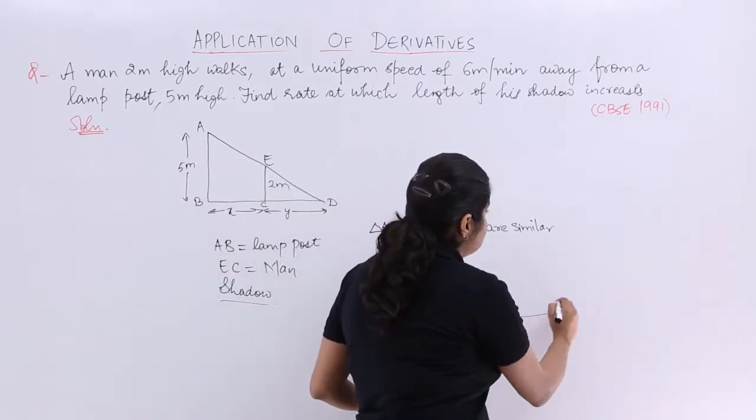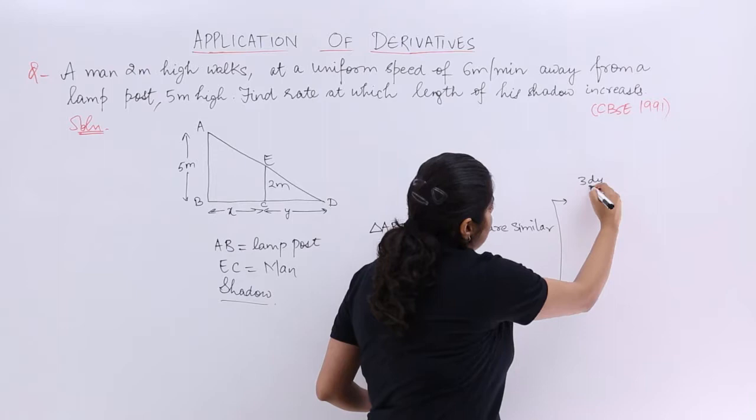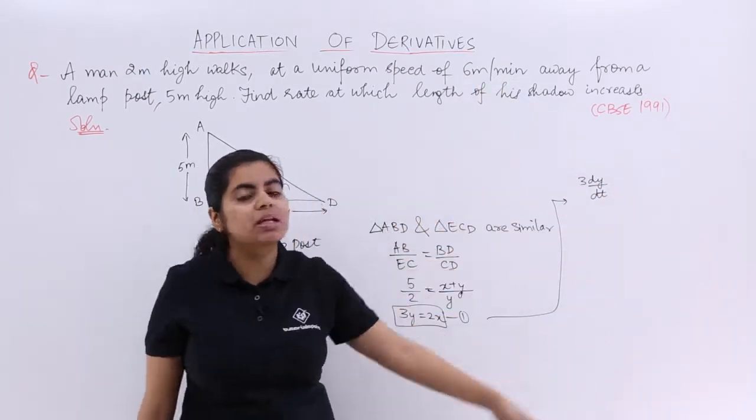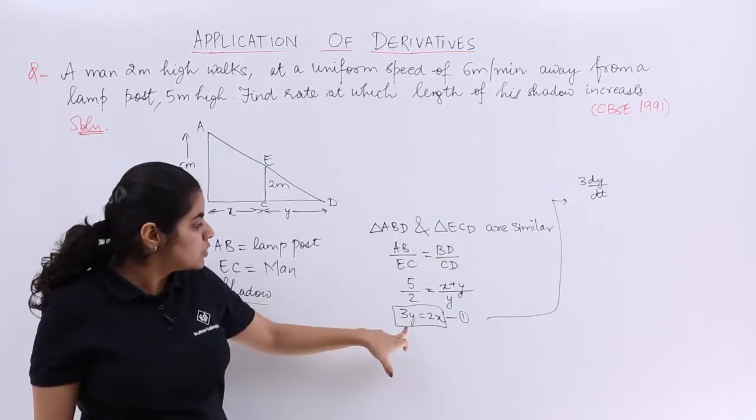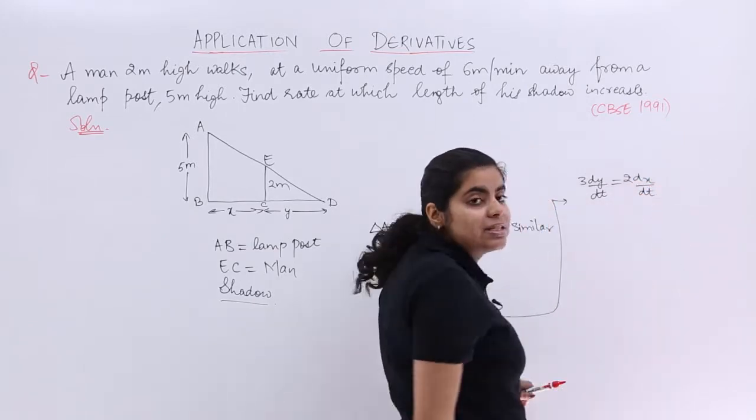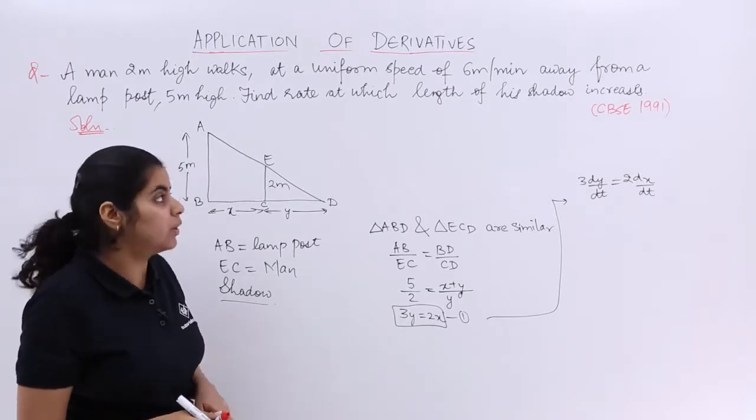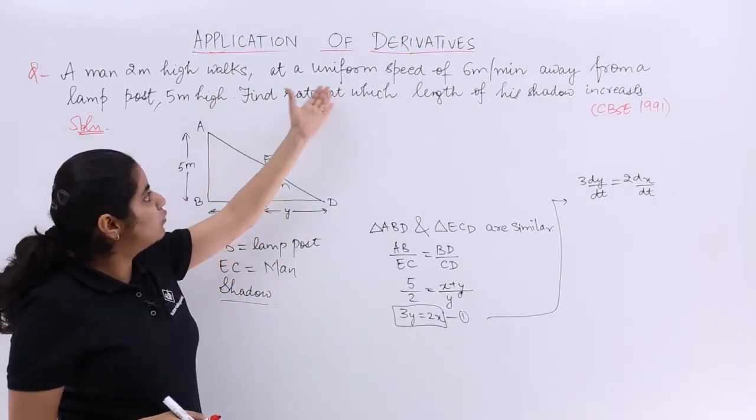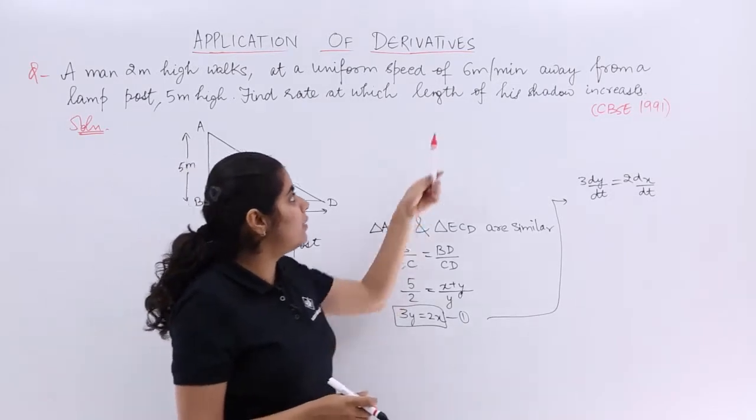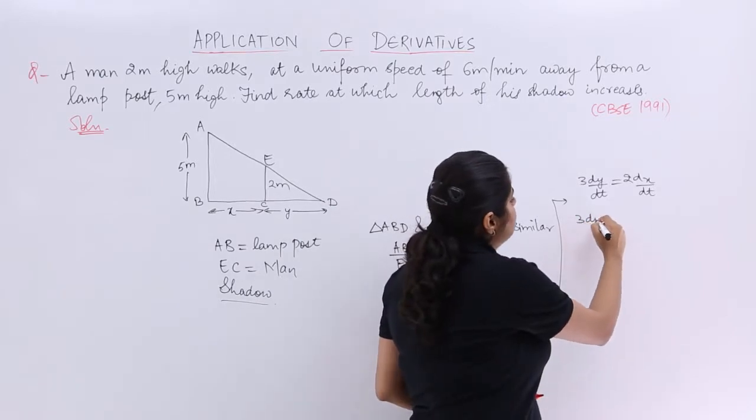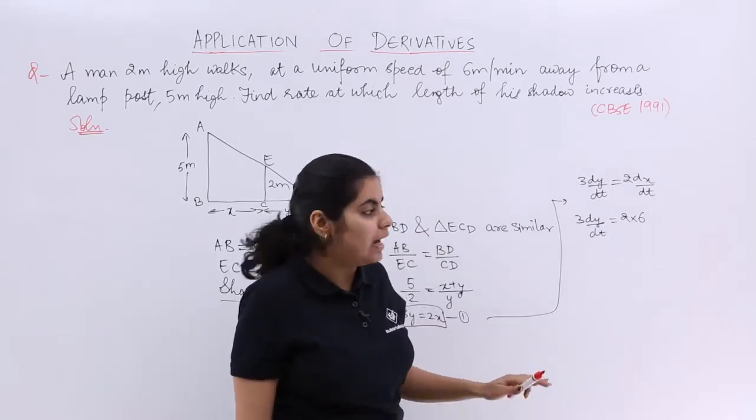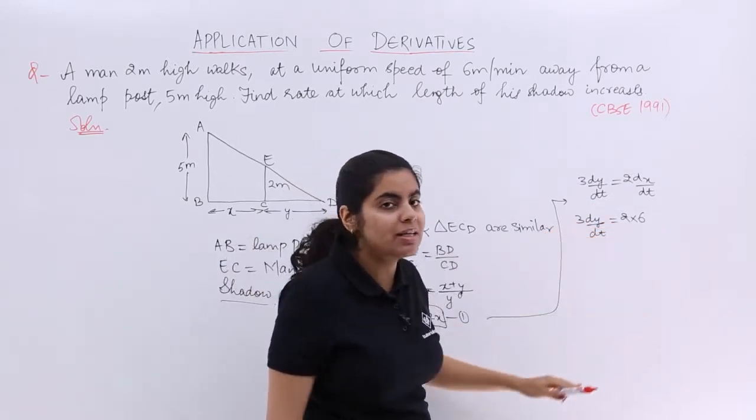So differentiating equation 1, my solution ships here. So I have 3 dy by dt because the shadow is increasing with respect to time, 6 meter per minute is given to us. So 3 dy by dt equals 2 dx by dt. Now what is given to us, what do we need to find out? We have been given that he walks at a uniform speed. So we have been given about dx by dt which is 6 meter per minute. So directly put the value of dx by dt, so 2 into 6. Now again you can already cancel it. So it becomes 3 1s are 3, 2s are...